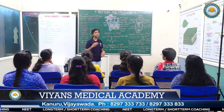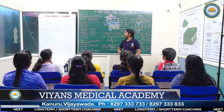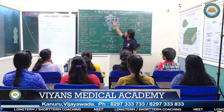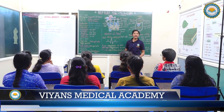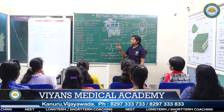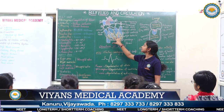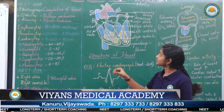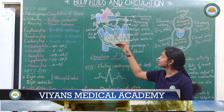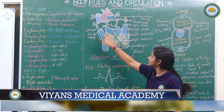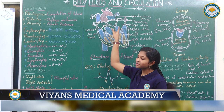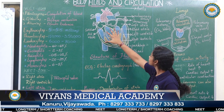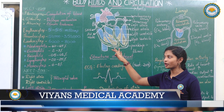Our heart consists of four chambers. Two small upper chambers are known as atria, and two large lower chambers are known as ventricles. There is a thin muscular wall between the two atria known as the inter-atrial septum, and a thick muscular wall between the two ventricles known as the inter-ventricular septum. There is also a septum between same-side chambers — all of you concentrate on these septa.